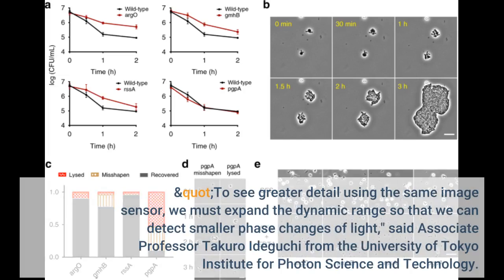To see greater detail using the same image sensor, we must expand the dynamic range so that we can detect smaller phase changes of light, said Associate Professor Takuro Idiguchi from the University of Tokyo Institute for Photon Science and Technology.